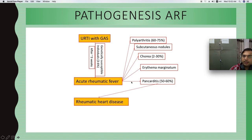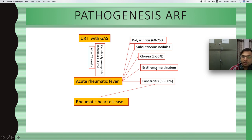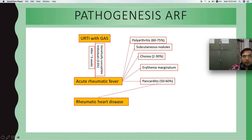Acute rheumatic fever affects four major body tissues: joints, heart, skin, and CNS. Manifestations include polyarthritis in 60 to 75 percent of cases, subcutaneous nodules, chorea in 2 to 30 percent of cases, erythema marginatum (macular skin rashes), and pancarditis in 50 to 60 percent. Pancarditis — inflammation of all three layers of the heart — will lead to rheumatic heart disease. We will continue with acute rheumatic fever tomorrow.